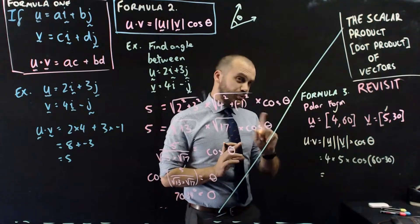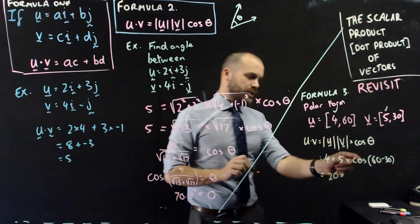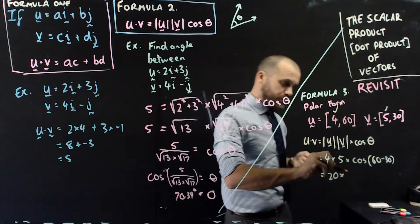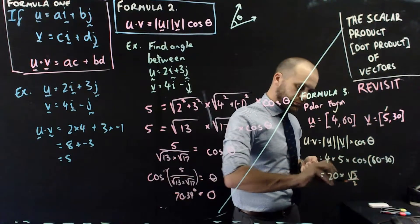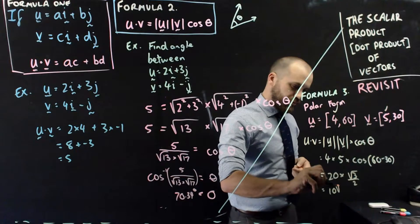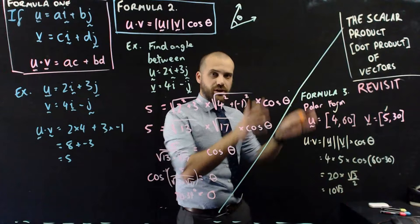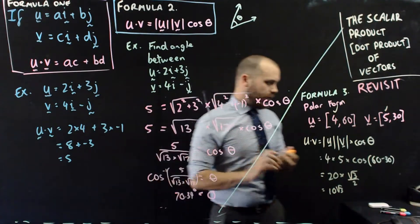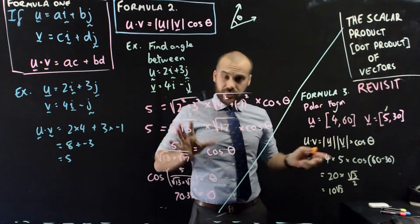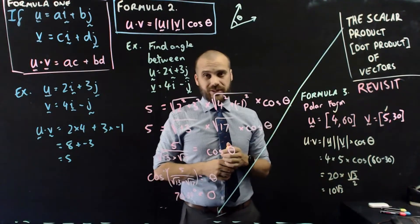Calculator. Actually, it's probably worth noting that you can do this without a calculator, just by the by. Cos 30, you should know that as root 3 on 2. So, that's 20 times root 3 on 2, which is 10 root 3, which is the answer. This could easily be done on a non-calculator style exam. I've given you one, two, three formulas. I need to clear all this off, and then I need to tell you about a few properties of the scalar product and the dot product.